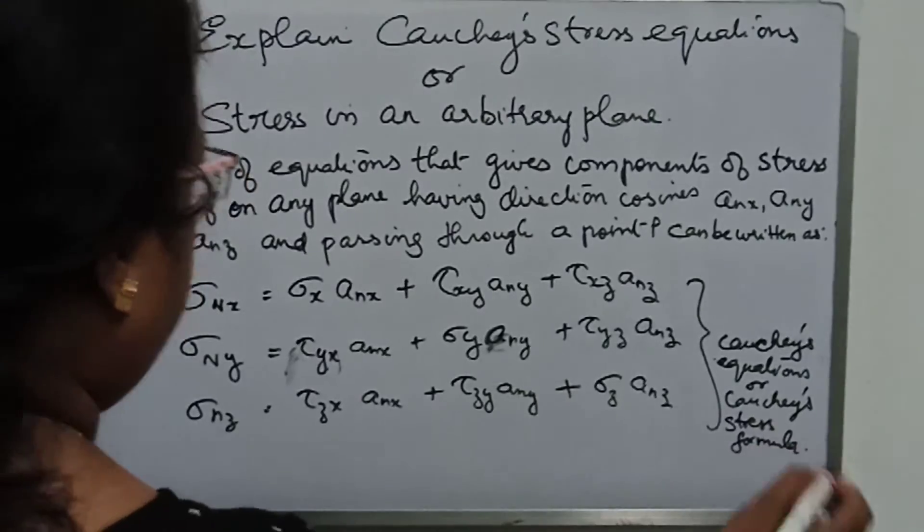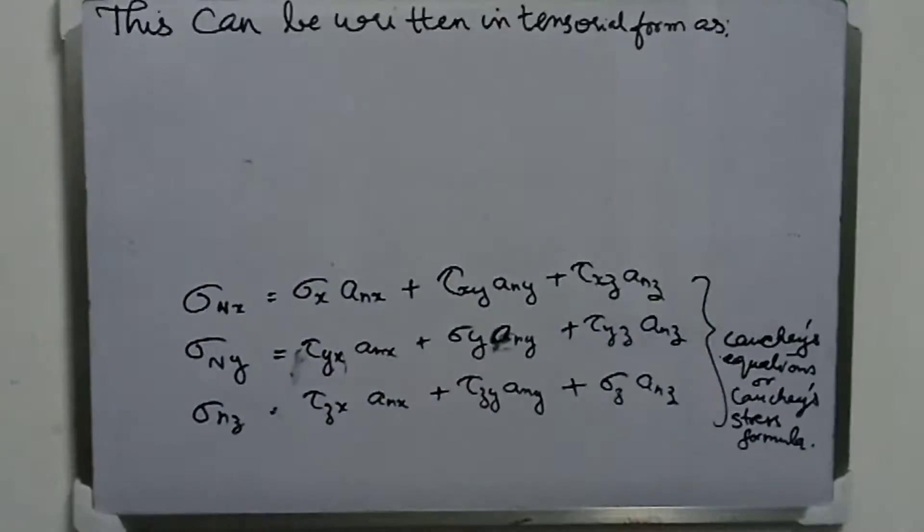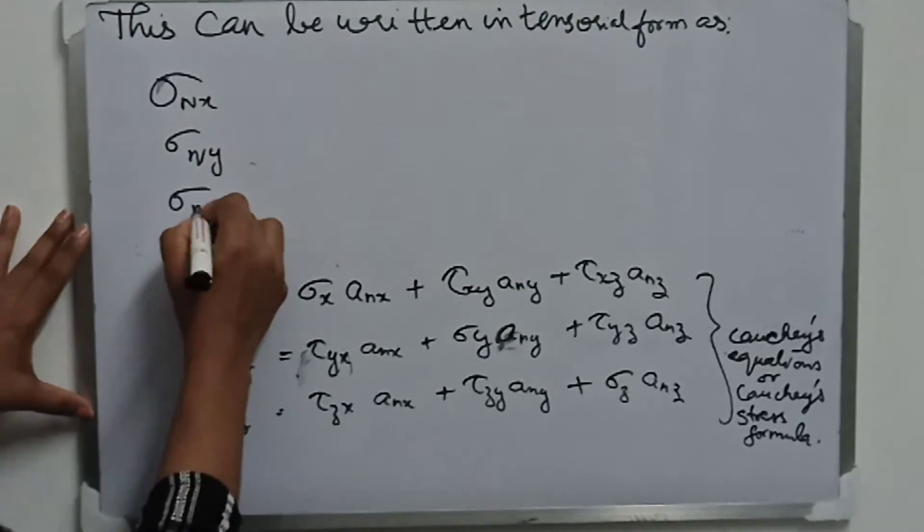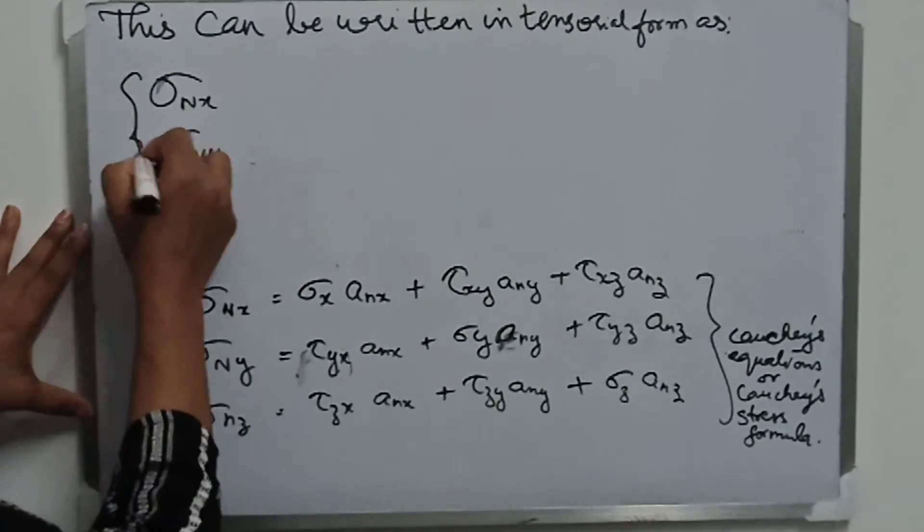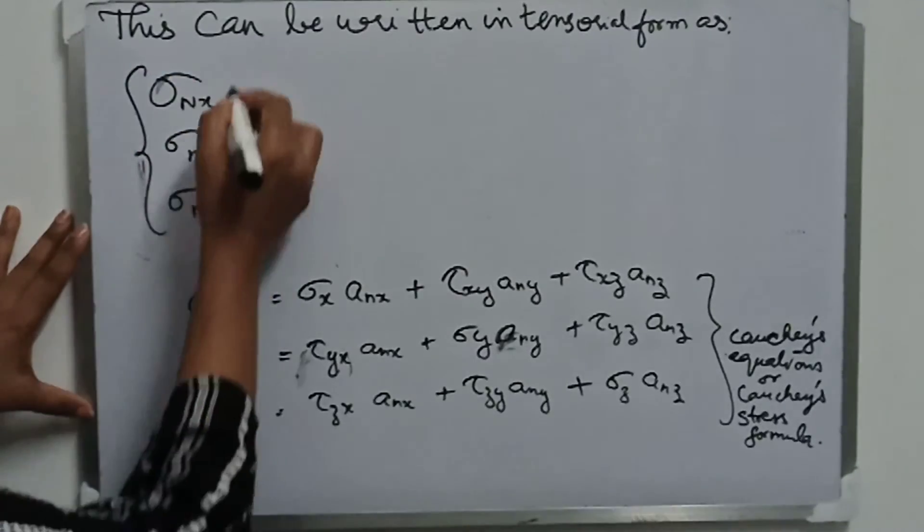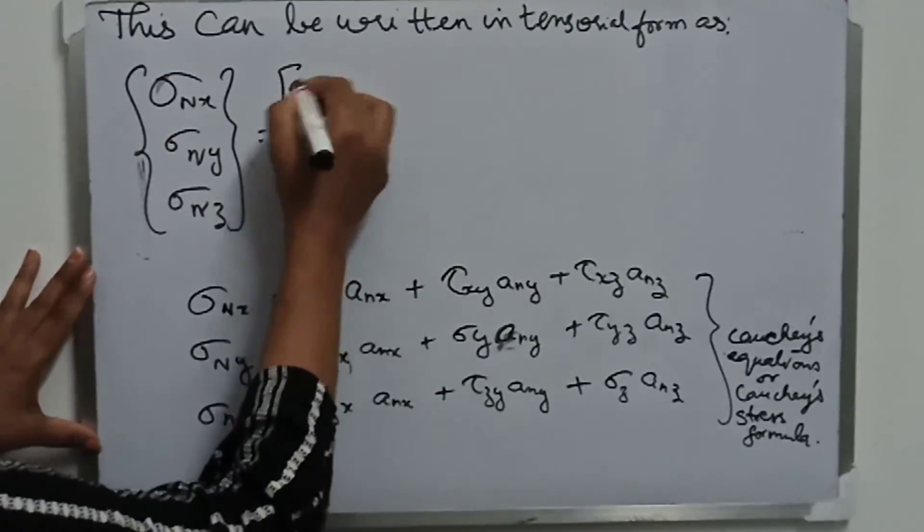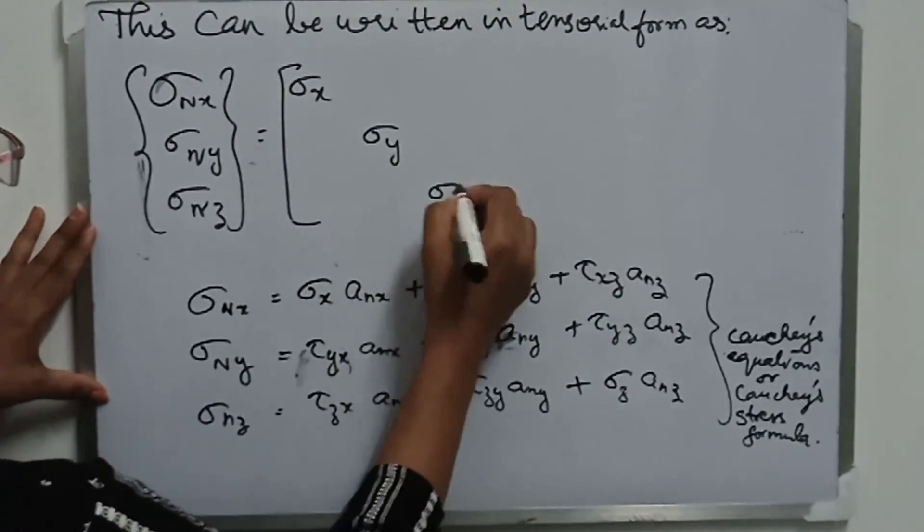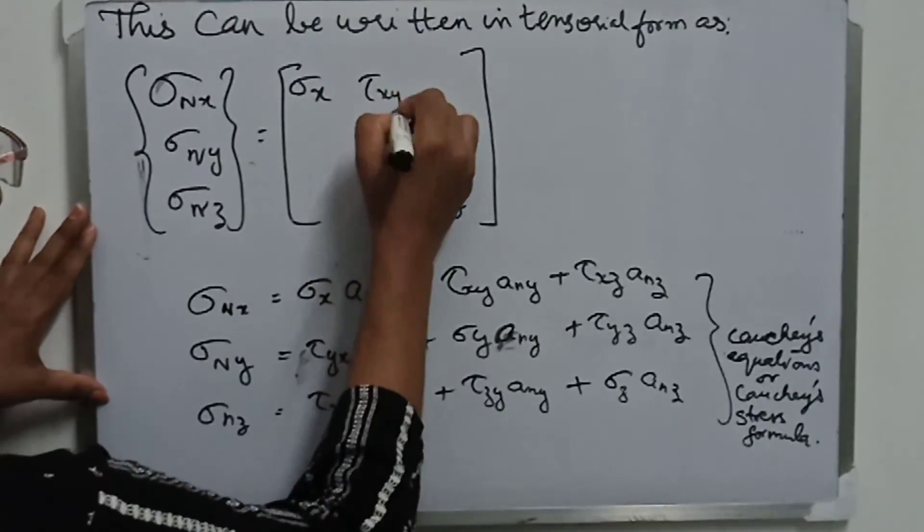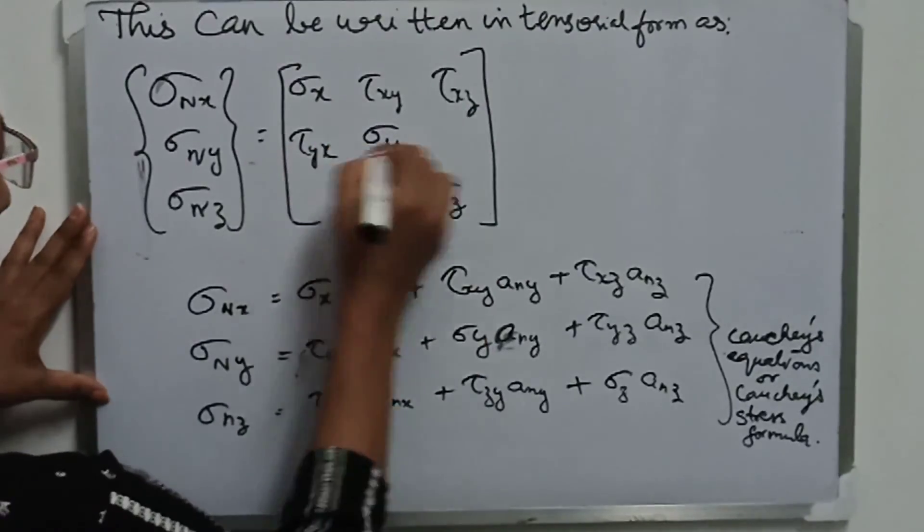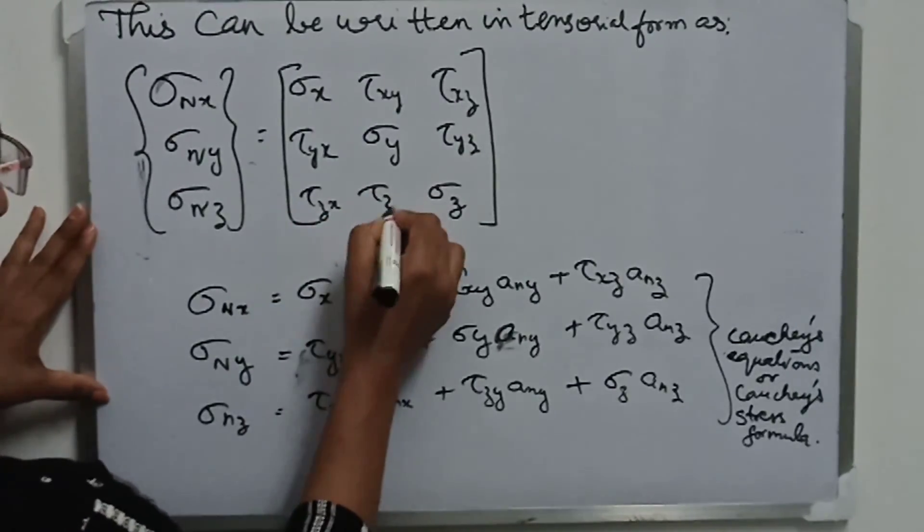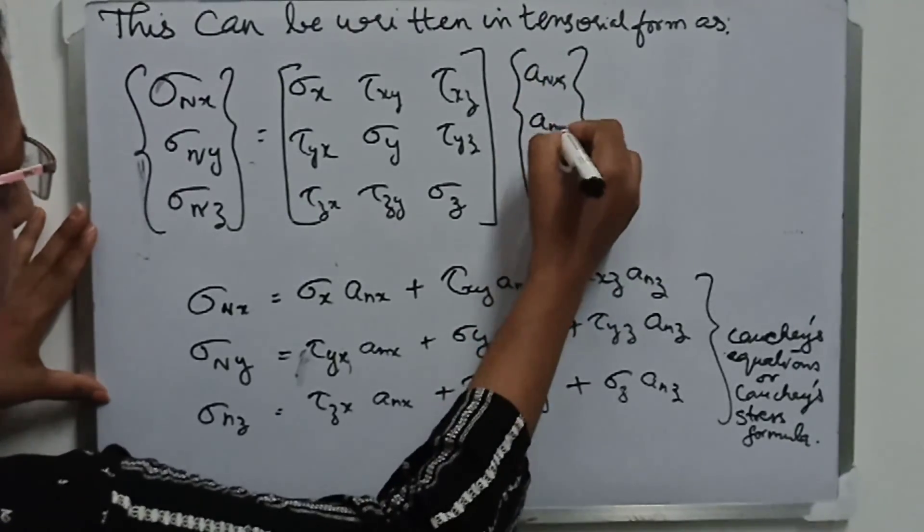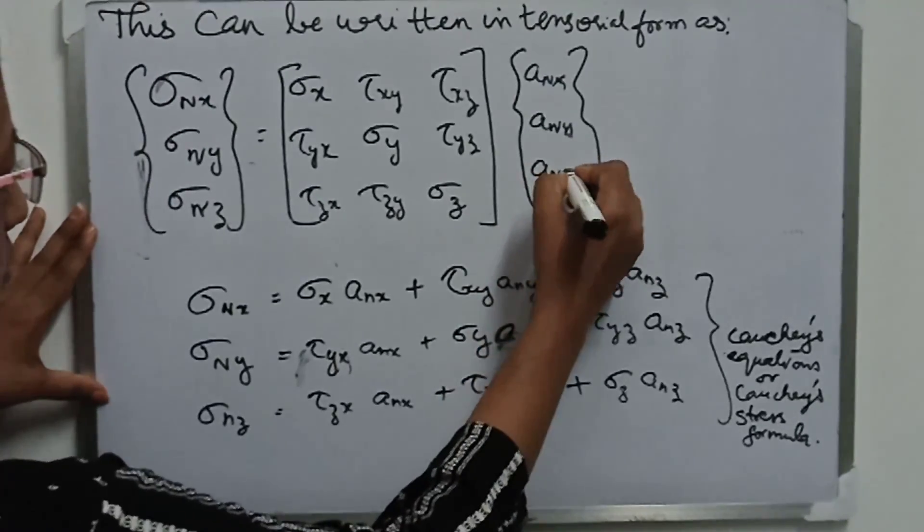Now this set of equations can also be represented in tensorial form or matrix form like this: [σnx, σny, σnz] equals a matrix with σx, σy, σz in the diagonals and shear stresses as the other components, multiplied by the direction cosines anx, any, and anz.